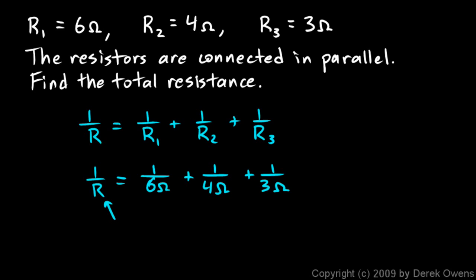Now we have three fractions here. We need to add them up. To add them up, they need to be like fractions, or in other words we need to have a common denominator. The common denominator here is pretty easy to see—it's going to be 12 ohms. So this first one, 1 over 6 ohms, is the same as 2 over 12 ohms. The second one, 1 over 4 ohms, is the same as 3 over 12 ohms. And the last one, 1 over 3 ohms, is the same as 4 over 12 ohms.